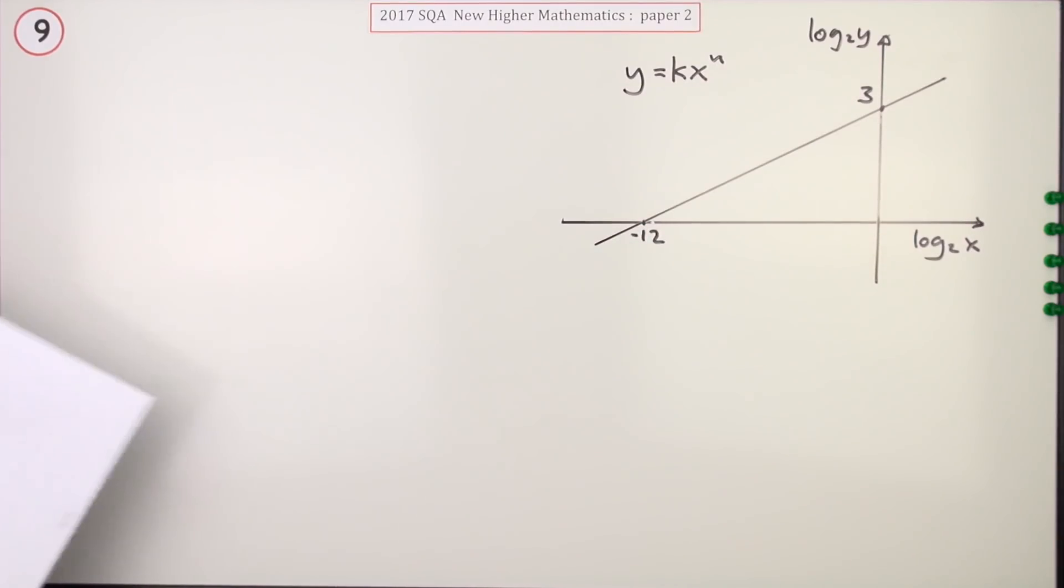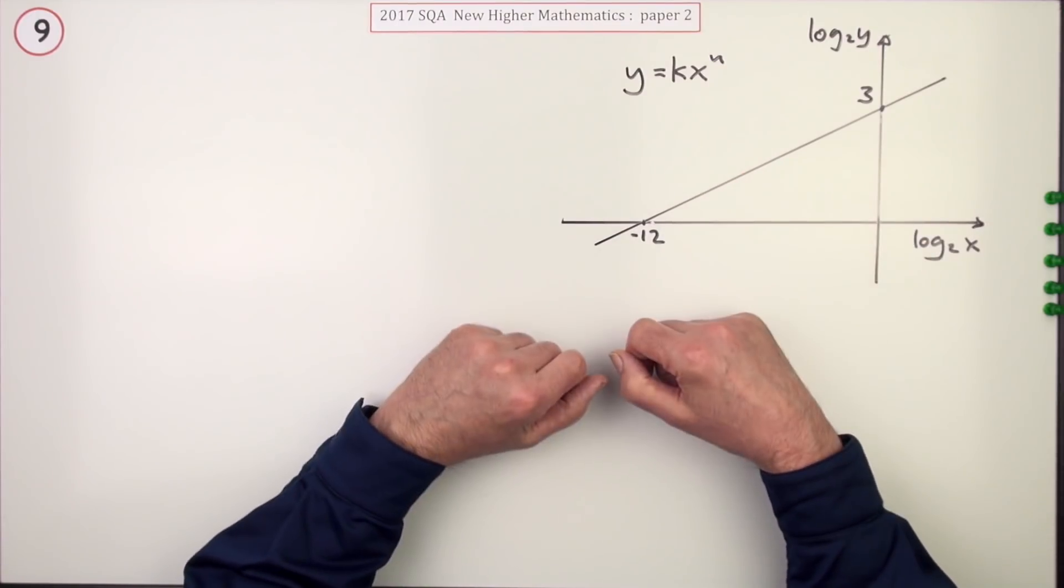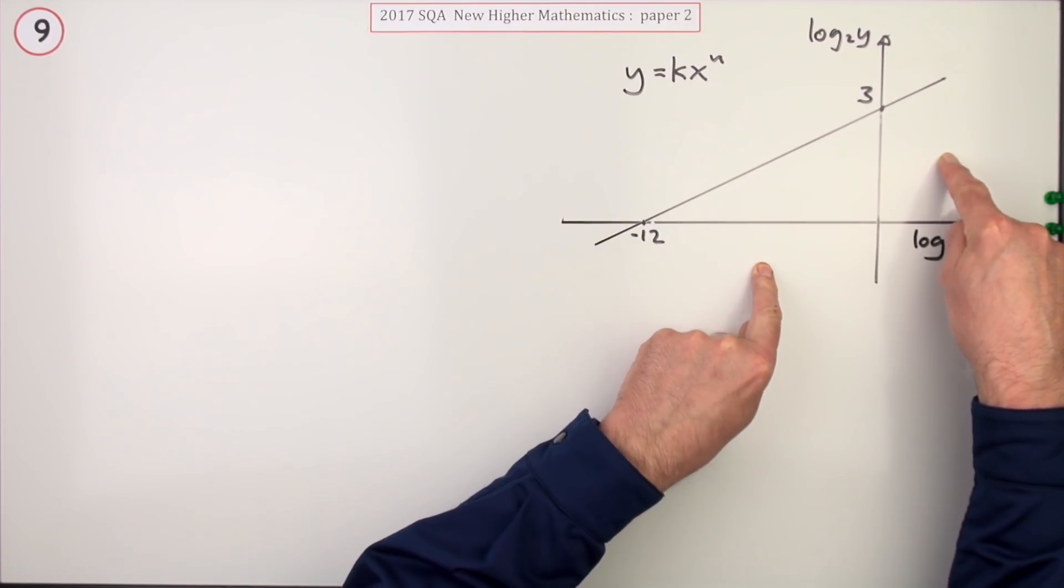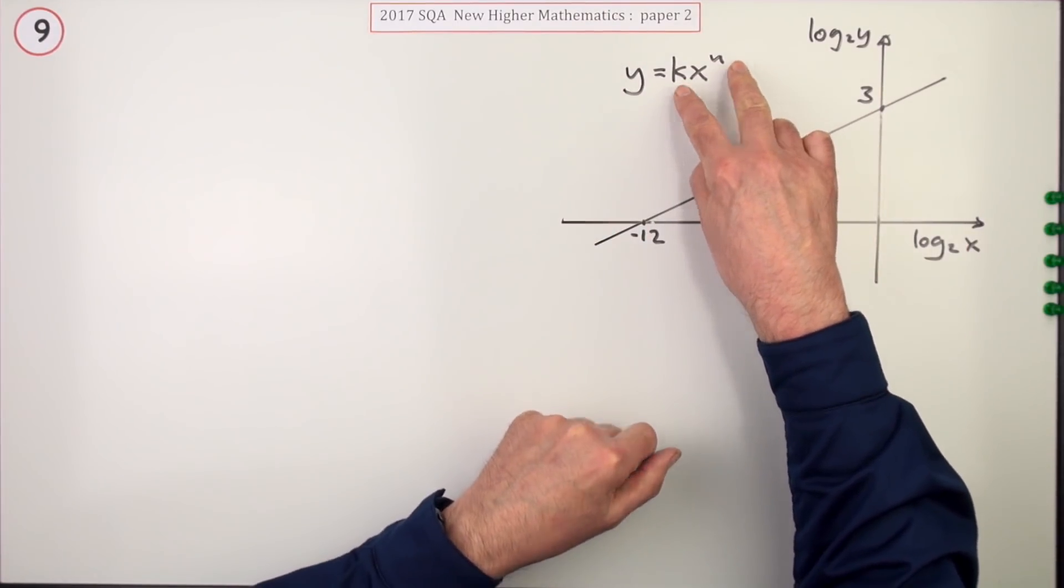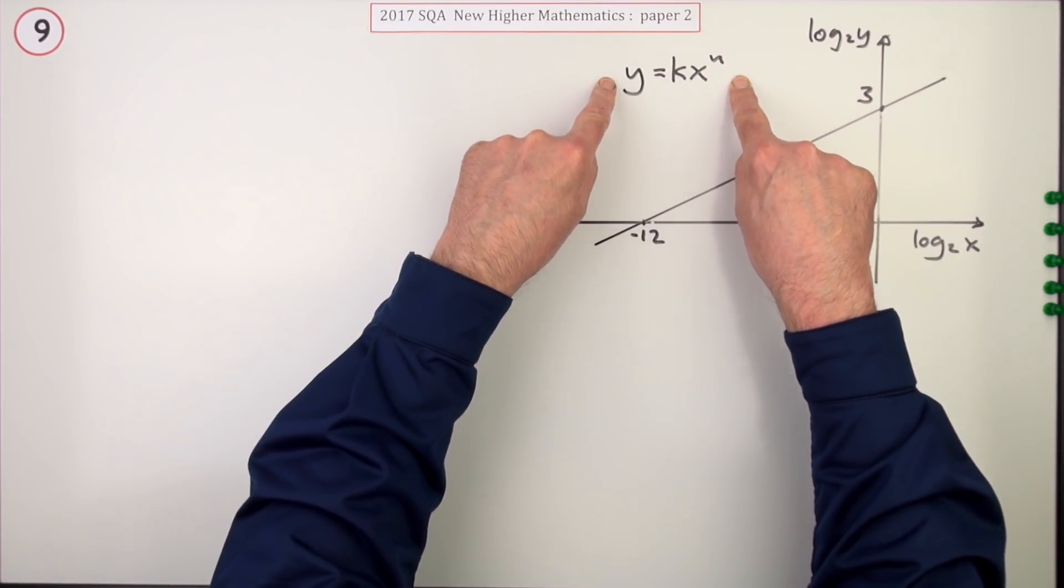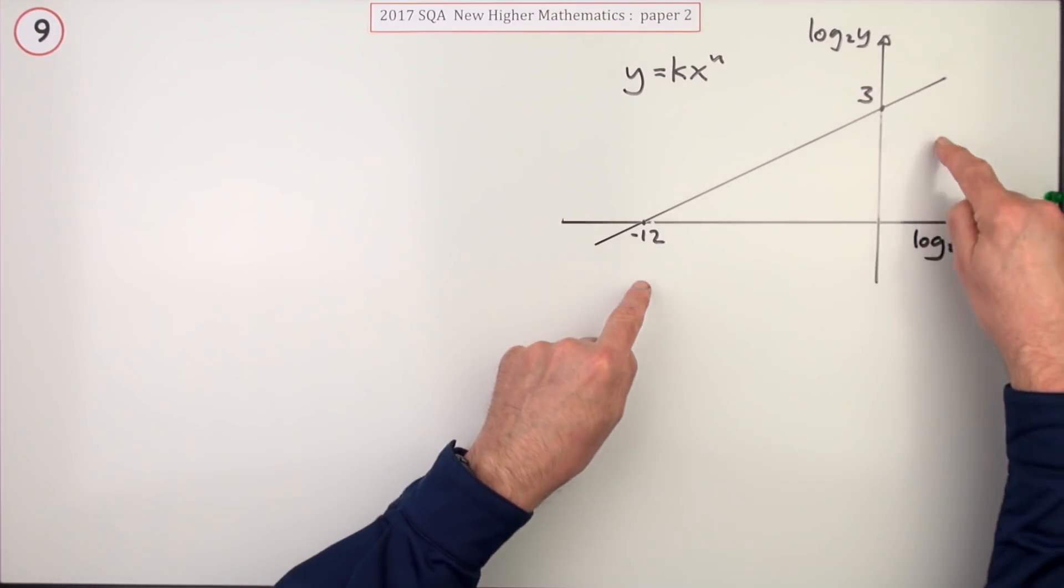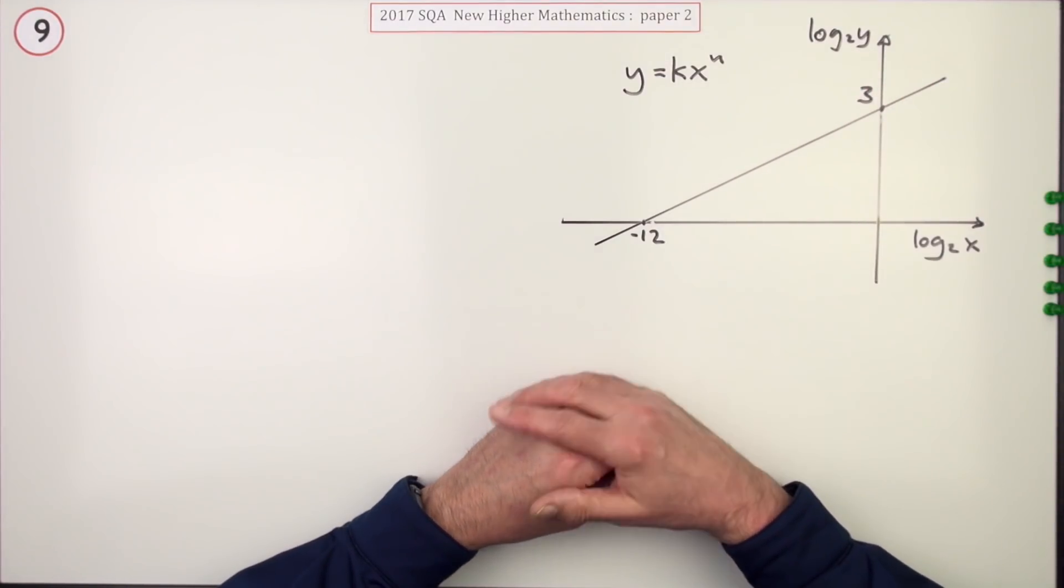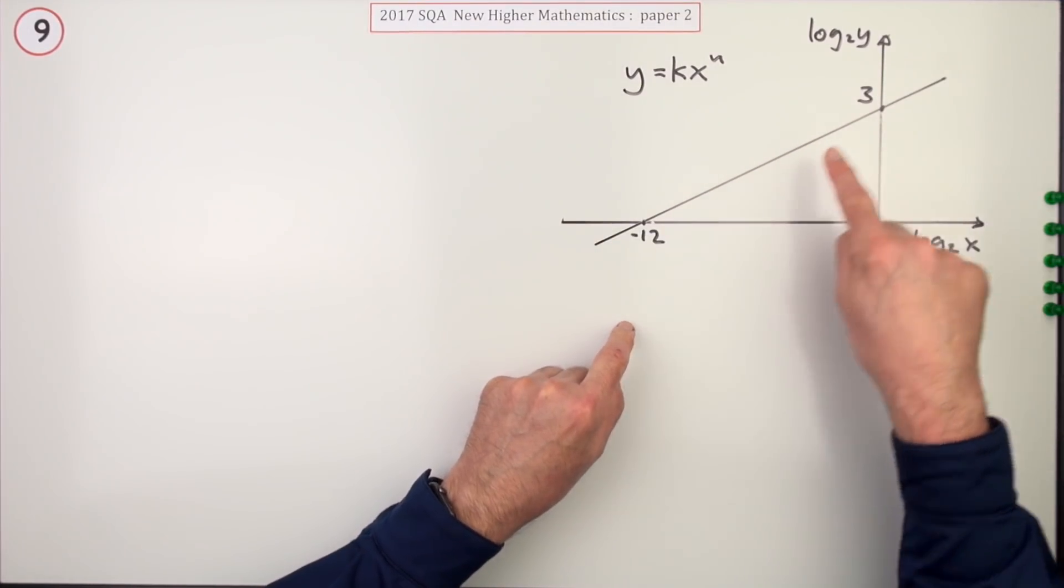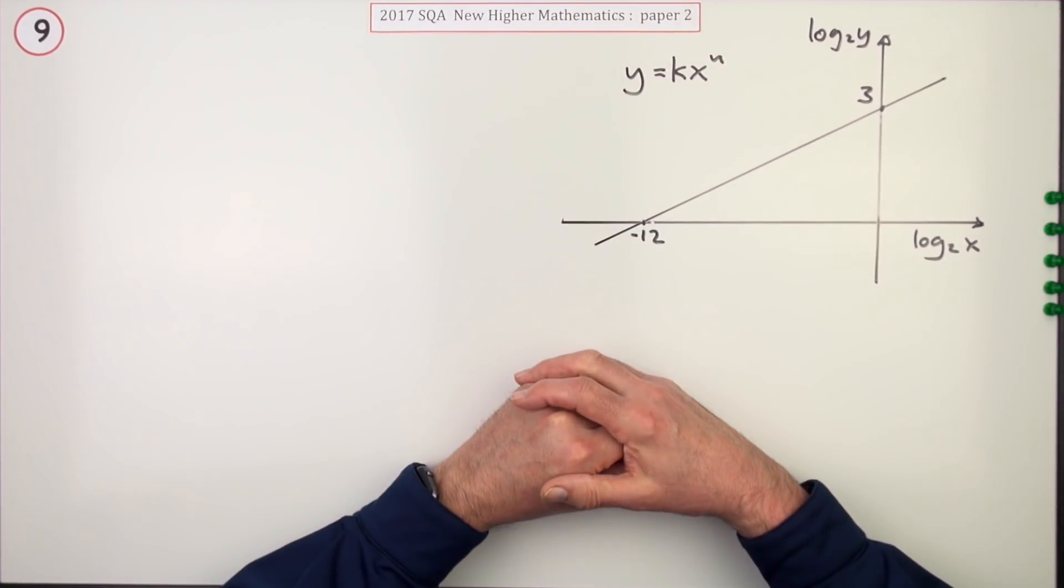There are three basic ways of doing this. You can either start with the equation of the graph and rearrange into this form and identify the two parts, or you could start with it in this form and apply logs and expand it into the form of the graph and then compare its features. There is a third way which is just to use this equation and given that you've got two points, feed those two points into it like simultaneous equations.